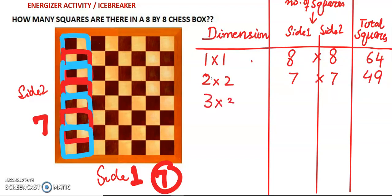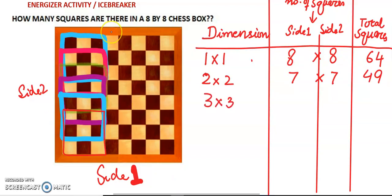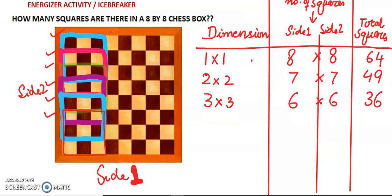Now we take the dimension as 3 by 3. If we take squares of dimension 3 by 3, we have 1, 2, 3, 4, 5, and 6 squares. It means 6 along side 1 and 6 along side 2, so in total we get 6 by 6, which is 36 squares.